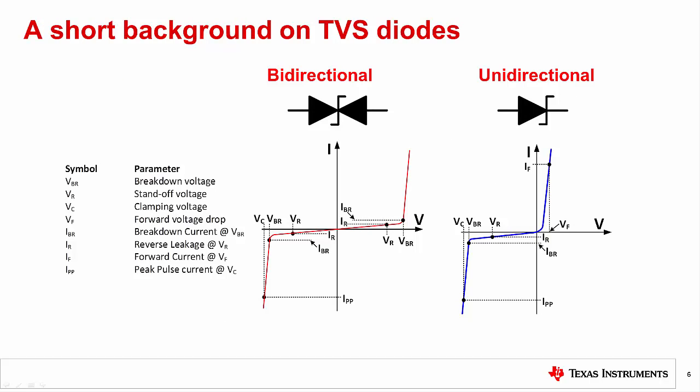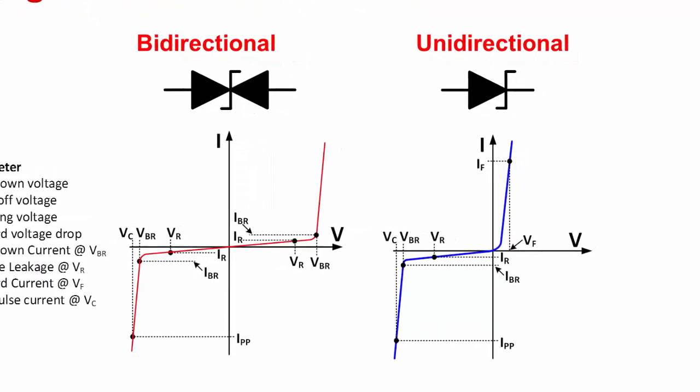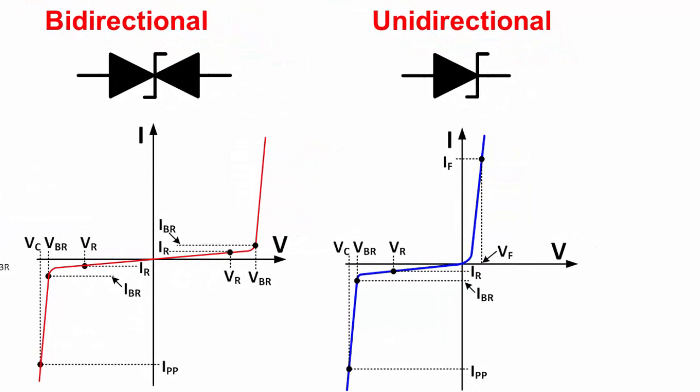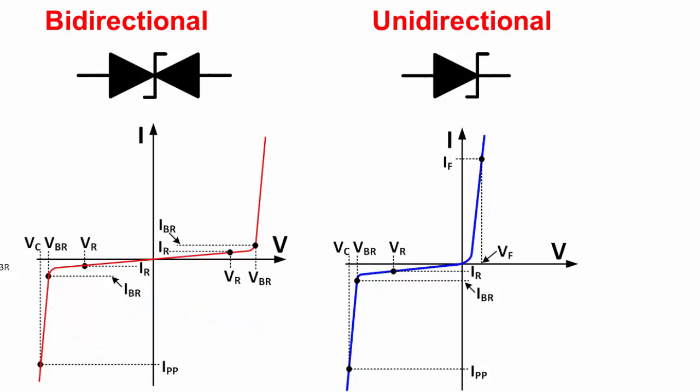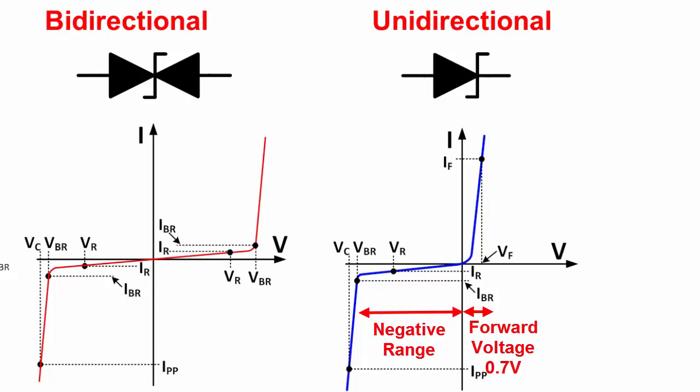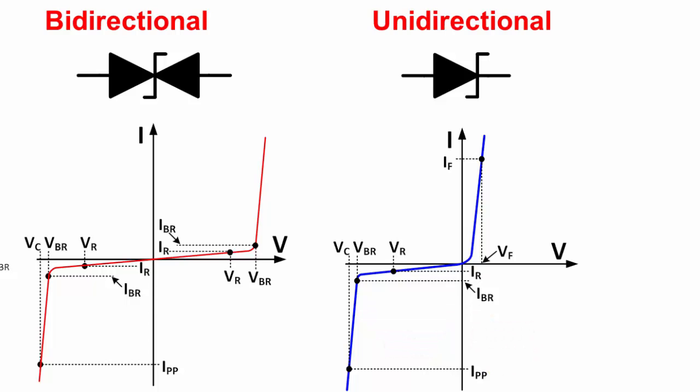Before discussing other protection methods, we will do a short review of the transient voltage suppressor diode, or TVS. The TVS diode has the same functionality as a Zener diode, except it is specifically designed to turn on very quickly and absorb large transient powers. There are two categories: unidirectional and bidirectional. The bidirectional device allows both positive and negative voltages to be applied before it turns on, so it is normally used to limit a signal input to a safe level. The unidirectional TVS acts like a traditional Zener diode, with a forward voltage drop of about 0.7 volts and voltage limited in the negative direction by the breakdown voltage, and is often used for supply overvoltage protection.